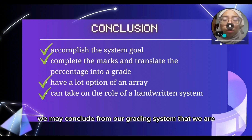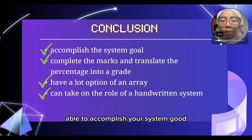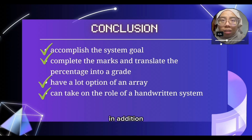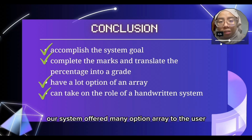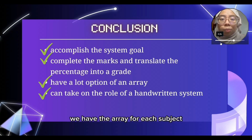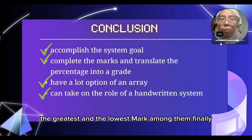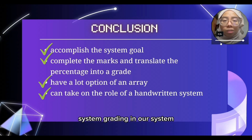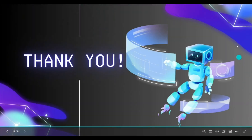We may conclude from our grading system that we are able to accomplish a working system code without any issue. Our system accomplishes the task of reading marks and translating the percentage into a grade. In addition, our system offers many options and arrays to the user. For example, we have a grade for each subject and the greatest and lowest marks among them. Finally, the GPS grading system can take over the role of a traditional grading system and can be activated for role and development.